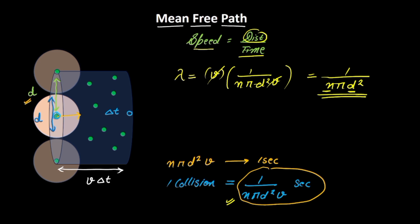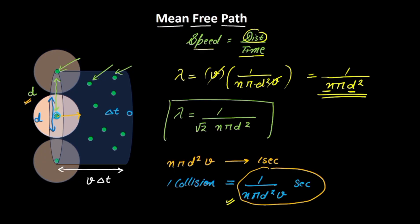One major assumption in this derivation was that all other particles are stationary. But in reality, the other particles will also be moving. So we modify this formula for all real-life applications as 1 divided by root 2 times n pi d squared. This is the formula to find the mean free path. I hope you are now familiar with the definition of mean free path and how we derive it. See you in the next video. Till then, bye-bye.